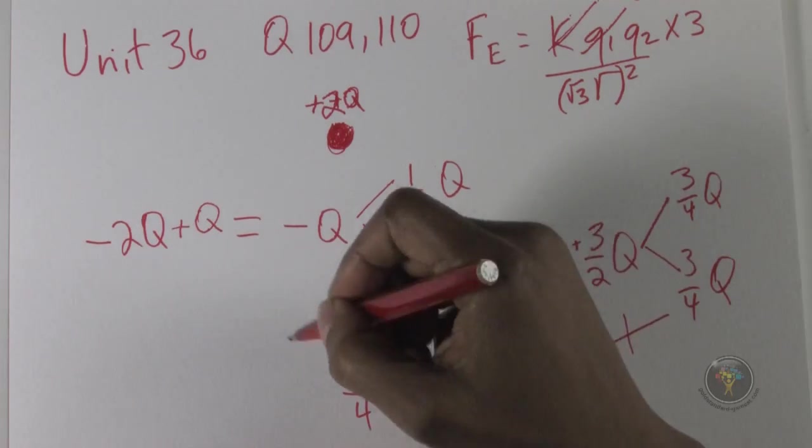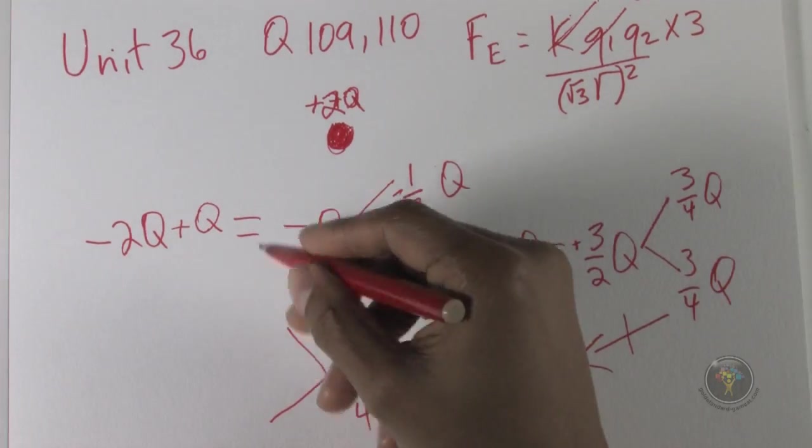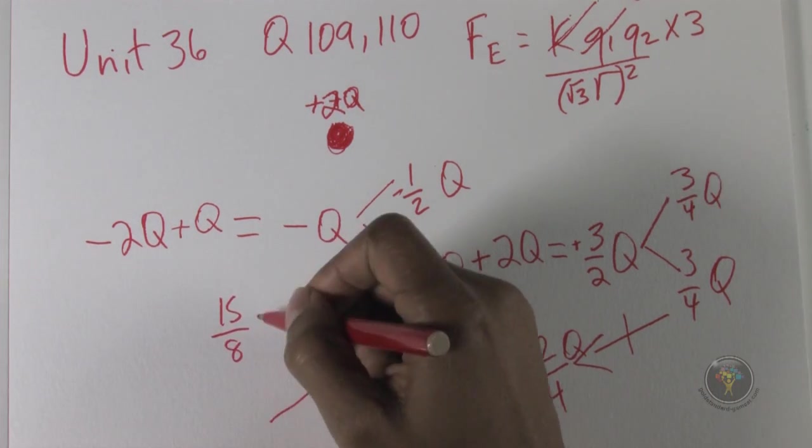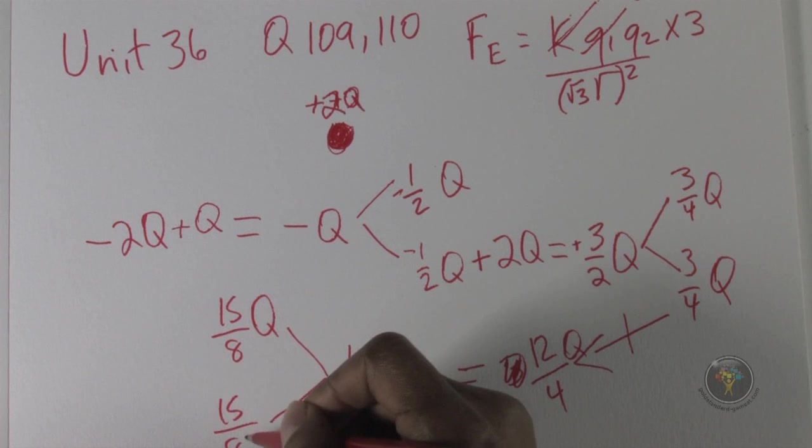So now we have to split this one into the two spheres in half. So we'll have 15 over 8 q and 15 over 8 q.